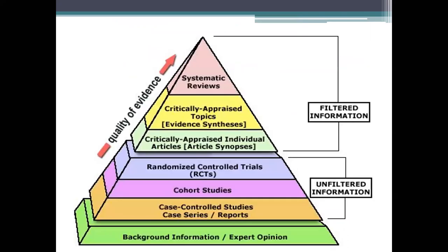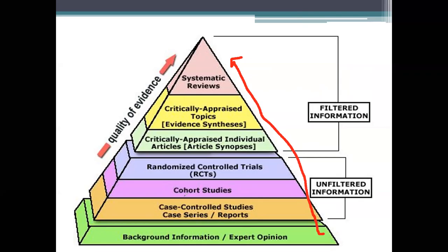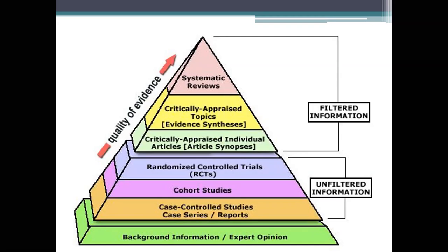Here's the pyramid of studies. We start at the bottom with background information. As we move up the pyramid, the studies get better. From the bottom up: single case studies, cohort studies, RCTs, critically appraised individual articles, evidence synopses, and at the top — systematic reviews. For your boards: they'll ask which study would be best to research something. Look for systematic reviews or a Cochrane systematic review. If they ask which is worst, it's usually a case report or case study.